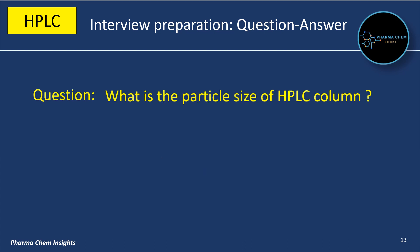What is the particle size of an HPLC column? The particle size of an HPLC column is generally between 3 to 5 micrometers.